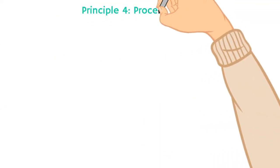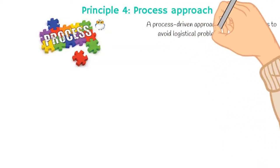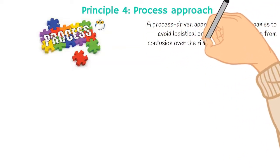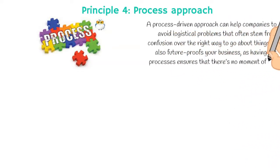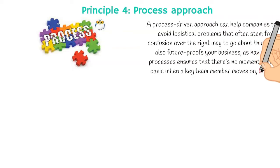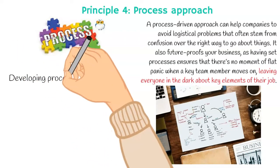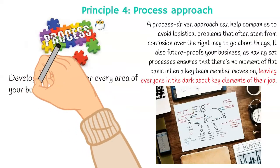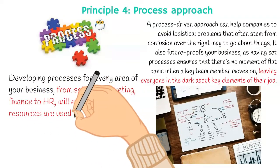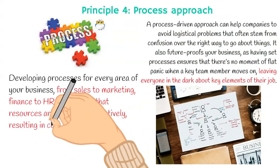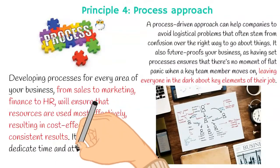Principle four: process approach. A process-driven approach can help companies avoid logistical problems that often stem from confusion over the right way to go about things. It also future-proofs your business, as having set processes ensures that there's no moment of flat panic when a key team member moves on, leaving everyone in the dark about key elements of their job. Developing processes for every area of your business, from sales to marketing, finance to HR, will ensure that resources are used most effectively, resulting in cost-effective and consistent results. It also allows you to dedicate time and attention to bigger and more exciting tasks.